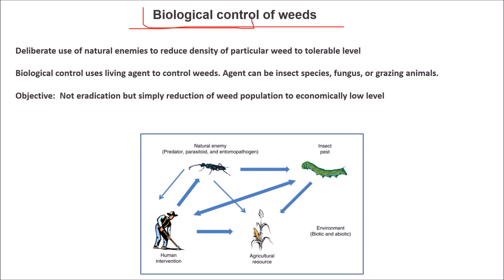What is biological control referring to? It is simply using natural enemies to reduce the density of any particular weed to a tolerable or acceptable level. Biological control method uses living agents to control weeds. The agent can be an insect species, a fungus, or any grazing animal — anything, as long as it is a living organism. The objective is not to eradicate but simply to reduce the weed population to an economic level.